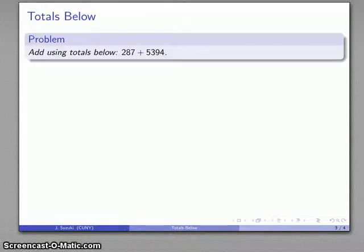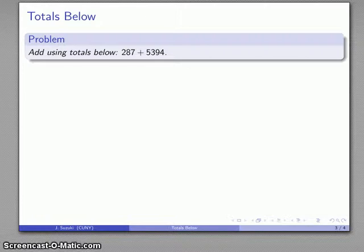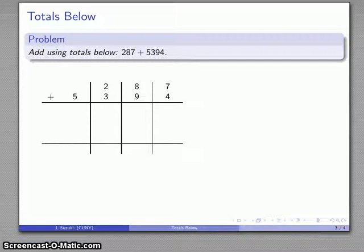So, for example, let's consider the addition 287 plus 5394. Now, since no base is specified, we can assume these numbers are written in base 10. And as before, we'll set down our place value chart, but the unit names don't really matter, so we'll omit the unit names, but we will include the addends.